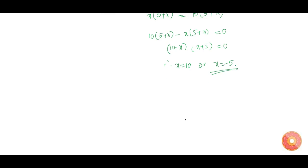The number of blue balls cannot be negative — if you have minus 5 balls, that means nothing. Therefore, the number of blue balls is 10. So x equals 10 for the given condition. This is our answer.